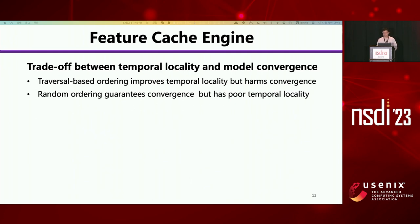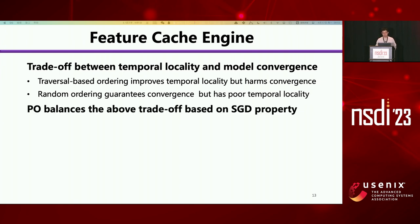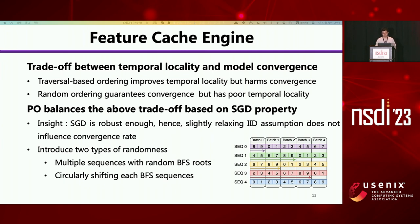However, there is a trade-off between improved temporal locality and model convergence. Traversal-based ordering increases temporal locality but harms GNN model convergence, since we don't choose nodes randomly and violate the IID requirement of SGD. On the other hand, random ordering obeys the IID requirement but has poor temporal locality. Proximity-aware routing balances this trade-off based on the SGD property. We find SGD is robust enough, so slightly relaxing the IID requirement does not influence the convergence rate. We introduce two types of randomness: multiple sequences with random BFS routes, and circular random shifting of each BFS sequence.